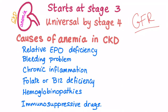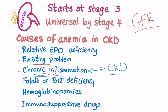What are the causes of anemia in cases of chronic kidney disease? There are a lot: relative EPO deficiency, bleeding problems, chronic inflammation — and the link between anemia of chronic inflammation and chronic kidney disease is discussed in my video on anemia of chronic disease. Anemia of chronic inflammation is the same thing as anemia of chronic disease. We also have folate or B12 deficiency, hemoglobinopathies, and immunosuppressive drugs.